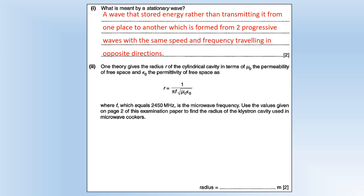One theory gives the radius of the cylindrical cavity in terms of the permeability of free space and the permittivity of free space, where f is the frequency of the microwave. Use the values from the formula sheet to figure out the radius of the cavity used in a microwave cooker. This is basically straightforward: plug numbers in and do a calculation. If you do that you end up with a radius of 0.039 meters or 3.9 centimeters, a very reasonable size for a microwave oven.